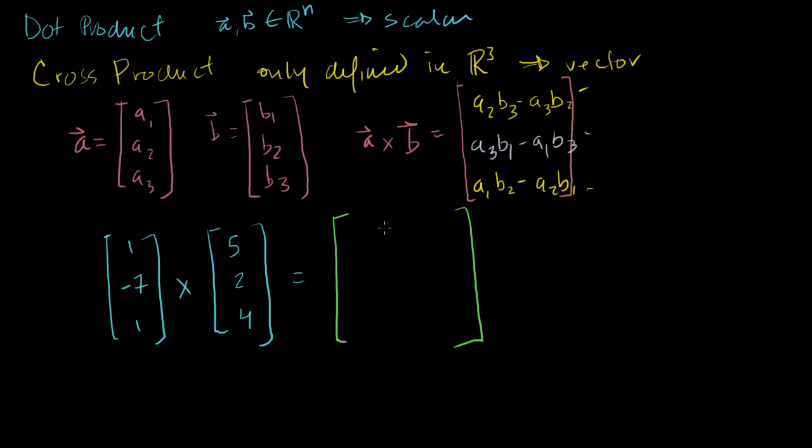So this is going to be equal to a third vector. For the first element in this vector, the first component, we just ignore the first components of these vectors and we say -7 times 4 minus 1 times 2. And these are just regular multiplication, I'm not taking a dot product, these are just regular numbers. Then for the middle term, we ignore the middle terms here, and then we do the opposite. We do 1 times 5 minus 1 times 4.